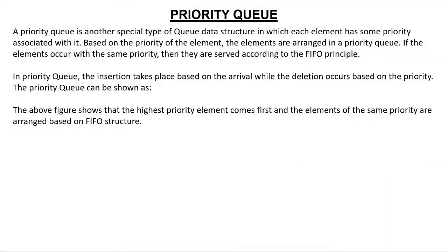Priority Queue is another special type of Queue data structure in which each element has some Priority. If I give you an example of a hospital — in a hospital, you have different cases of patients where some patients are very critical, some are less critical, and some are only for OPD purposes. Critical patients have the highest priority, less critical patients have the second highest priority, and OPD patients have the least priority because they are just for consultation.